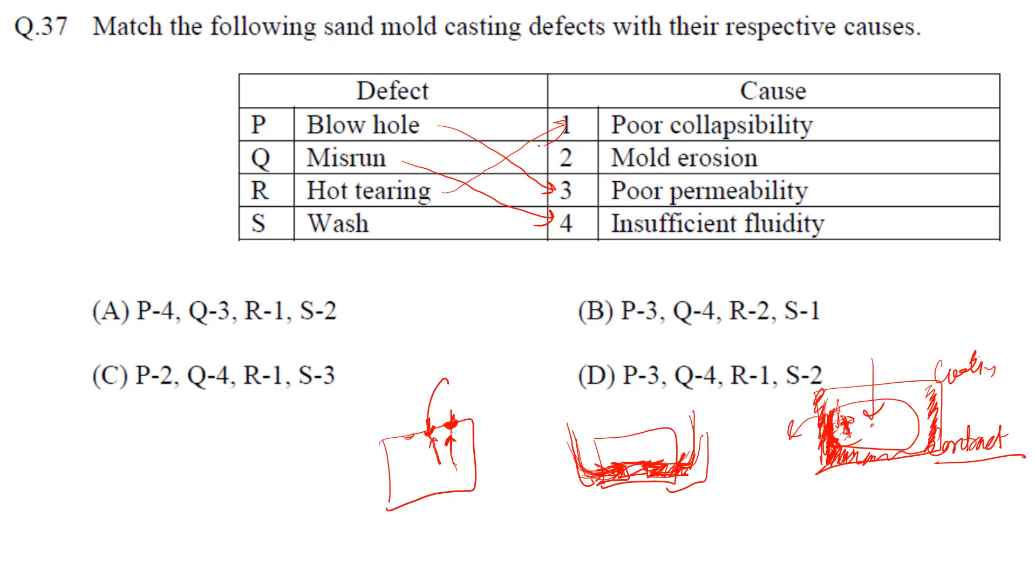So because of this problem, the hot tearing may occur. Poor collapsibility. Next is the wash. Wash basically happens like, suppose this is the mold, and this is the sand. Now I am putting liquid metal over here, and this mold is so weak that due to the force of this molten metal, this gets broken easily. Means during just pouring the metal, this gets broken.